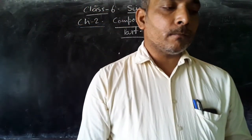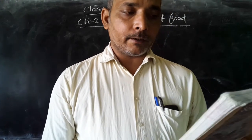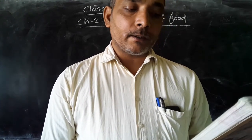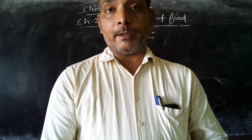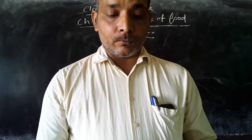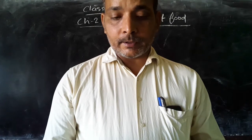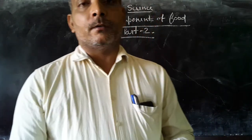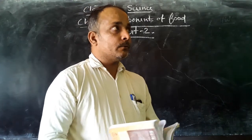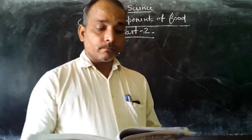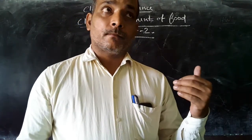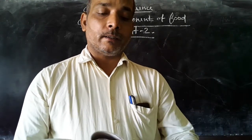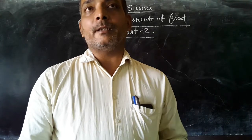Iron is needed to make hemoglobin. Water is essential for our body. I also described roughage, which helps in easy digestion.